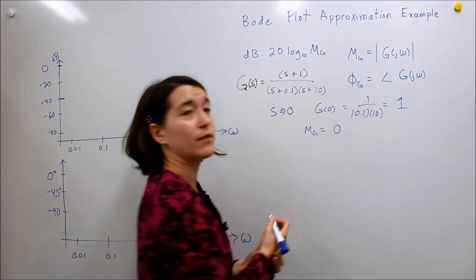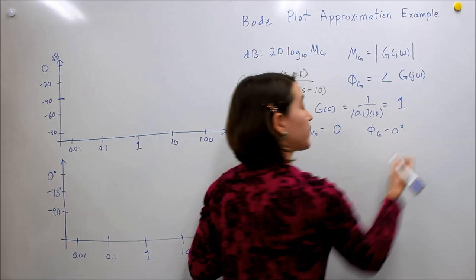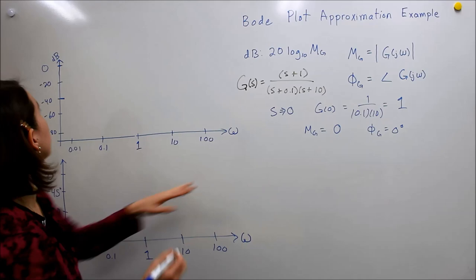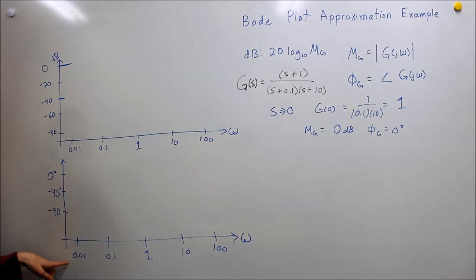If we look at the angle, phi of G here — well, one is positive on the real axis, so we're going to have zero degrees. So at very small values, we know this system is going to look like zero dB and zero degrees. So we can start by drawing that out: here we have zero dB, we start here; here we have zero degrees, we start here.